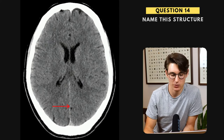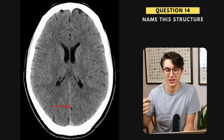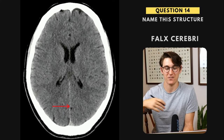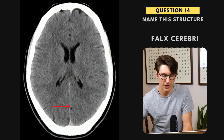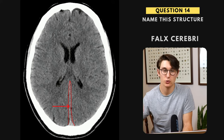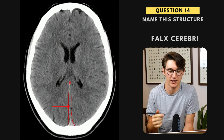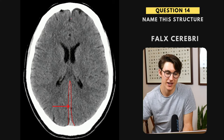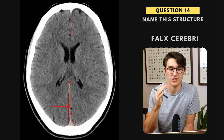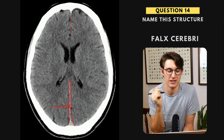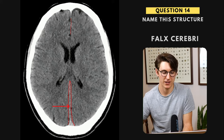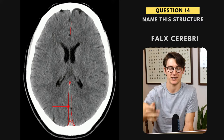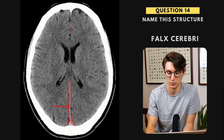Question fourteen — a nice easy one. This is the falx cerebri. We've got this invagination of our dura mater, with two layers of dura coming together. The falx cerebri is very thick posteriorly. Anteriorly, there's just a very thin falx extending downwards towards the ethmoid bone, attaching to the crista galli. At the back, where it invaginates, it gives rise to our superior sagittal sinus coming across the top, housing the superior sagittal sinus.